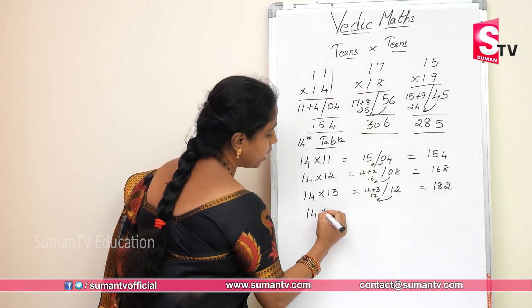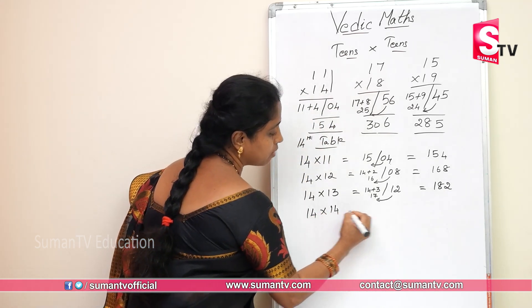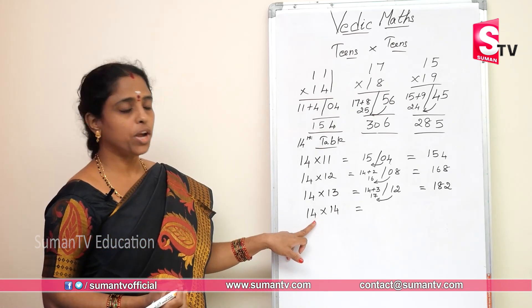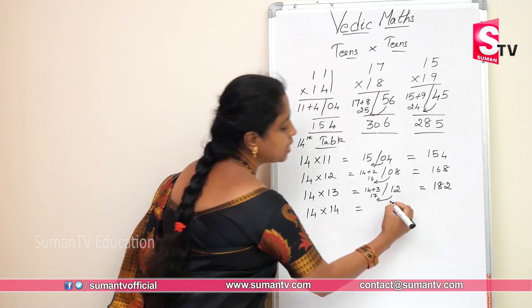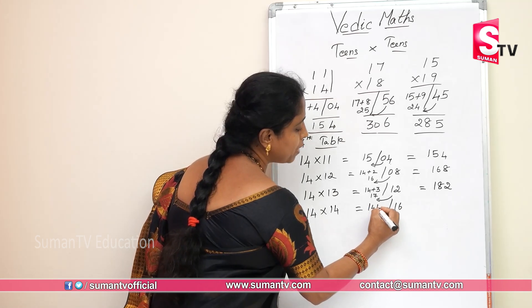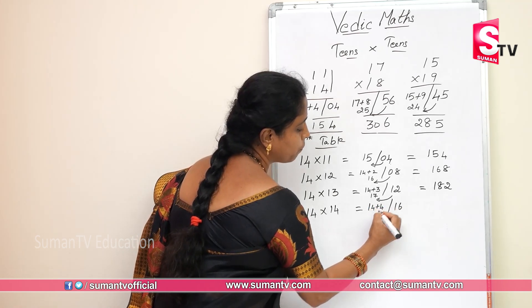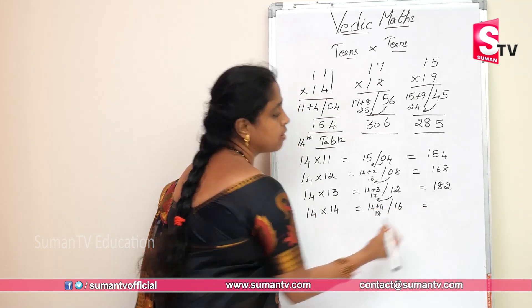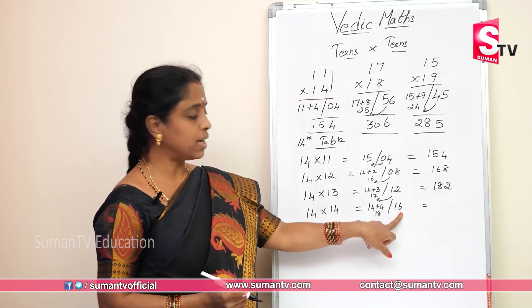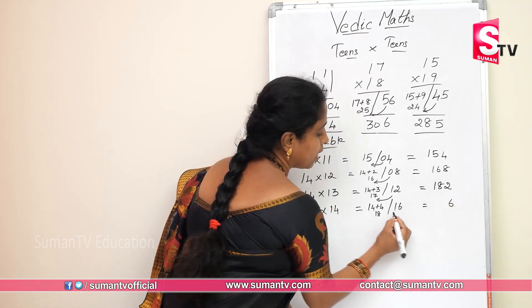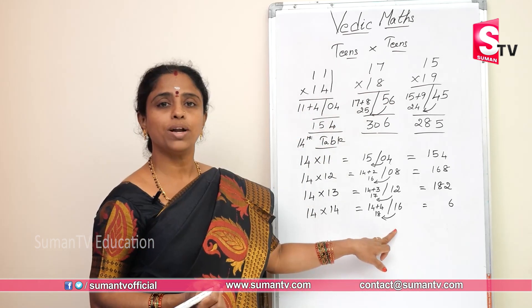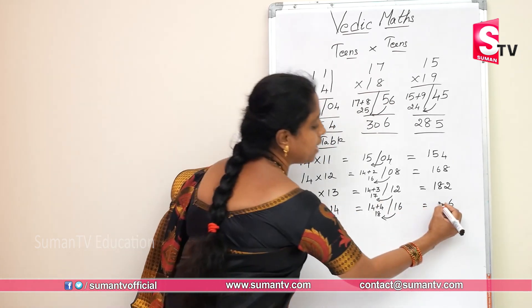14 into 14. 4 fours are 16. 14 plus 4 is 18. Write the end number 6 here, carry over this 1 to here. 18 plus 1 is 19. So 14 into 14 is 196.